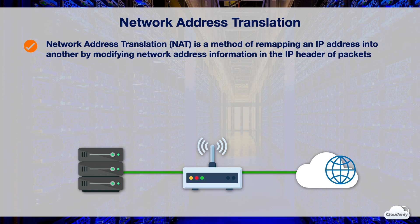NAT hides the source IP addresses of a private network. The hidden addresses are changed into a single public IP address, as the source address of the outgoing IP packets, so they appear as originating not from the hidden host, but from the routing device itself. One internet-routable IP address of a NAT gateway can be used for an entire private network.